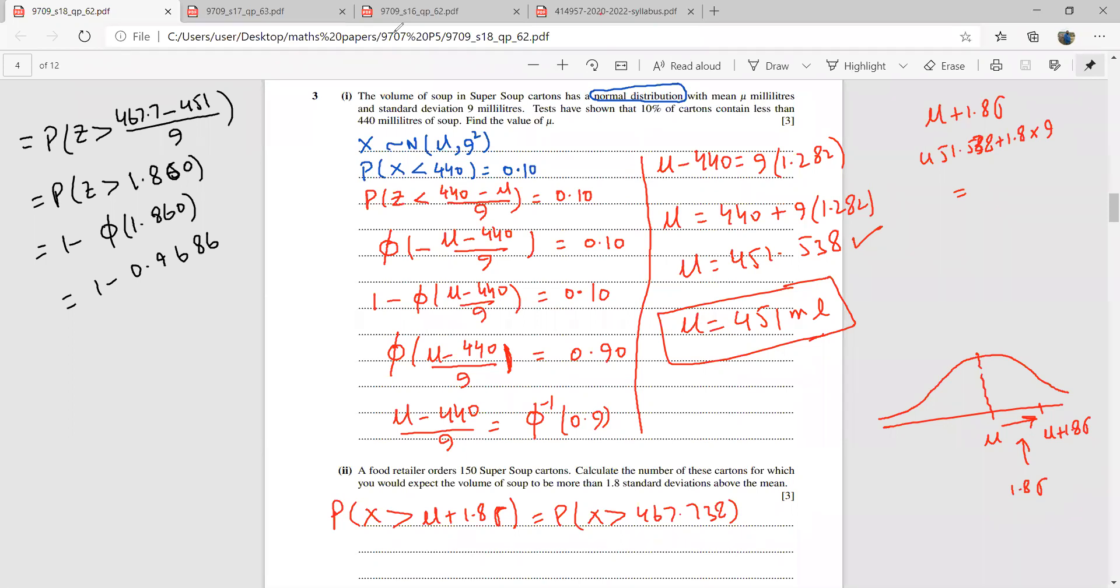This is 0.0314. Now I'll be multiplying this with 150. So the answer is going to be 150 times this, so that is 4.71. This is much closer to 5, maybe if we have to round it up to the exact number. Someone please check the answer. The answer is confirmed, so we can move to the next question in the next segment.